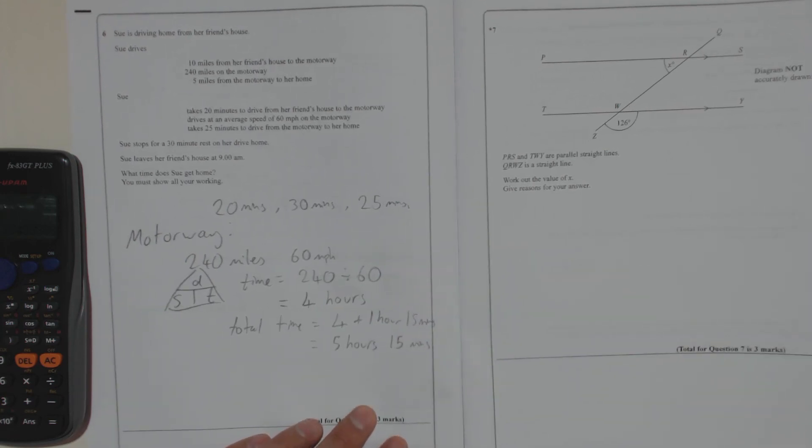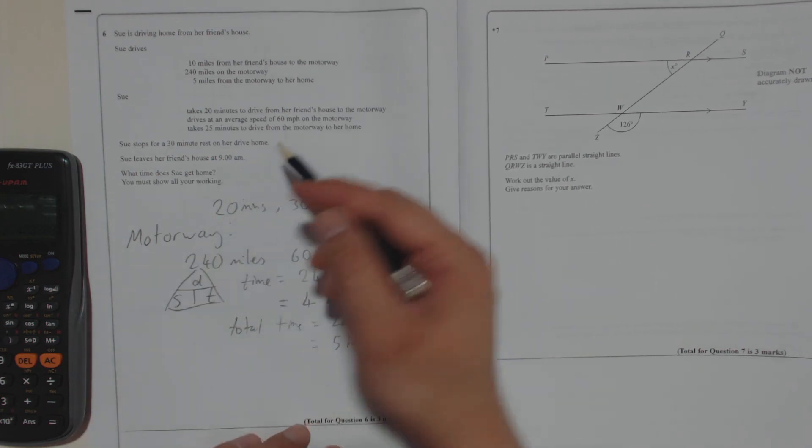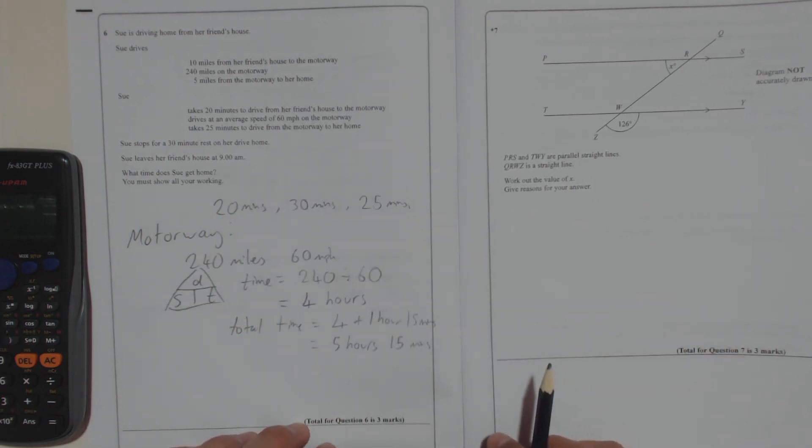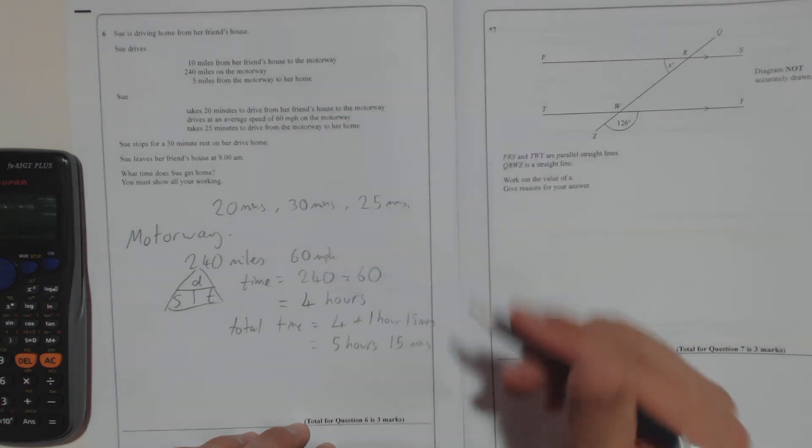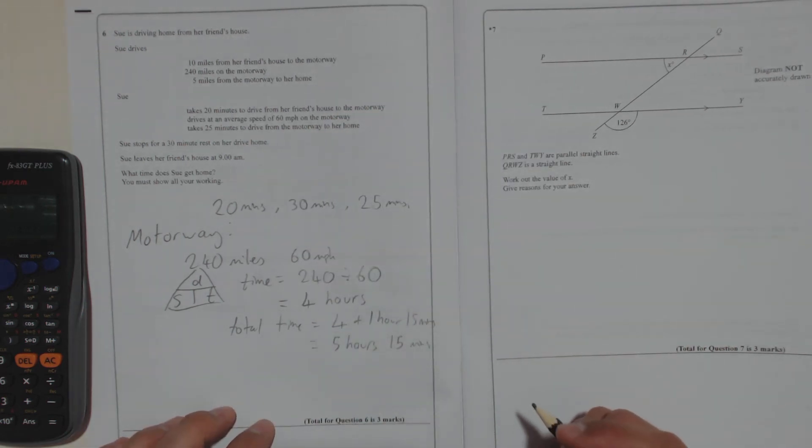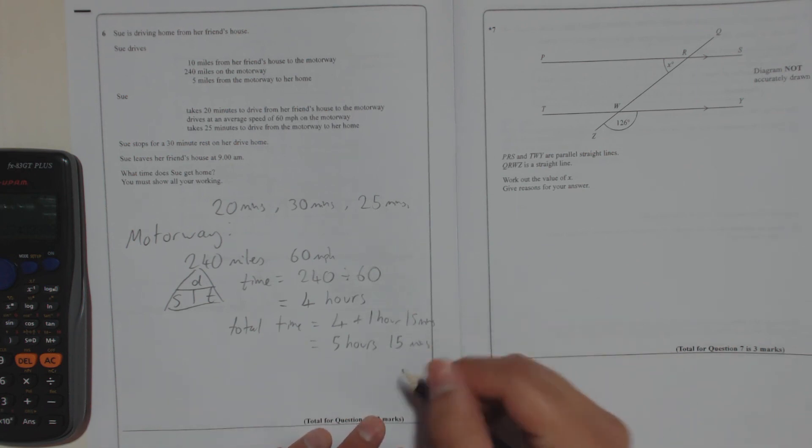And if she left her house at 9am, 5 hours later is, 9 plus 5 is 14, so 14 o'clock, which is 2 o'clock plus 15 minutes, so it's going to be 2.15.